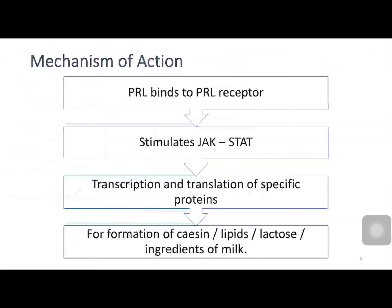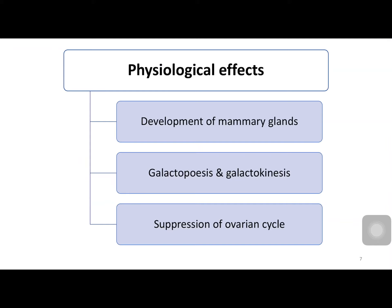Prolactin mainly acts on the prolactin receptor present in the mammary tissue and causes formation of more casein, lipids, and lactose, which are the main ingredients of milk. The physiological effects of prolactin are development of the mammary gland, galactopoiesis — that is production of milk — and galactokinesis — that is secretion of milk. Another important physiological role of prolactin is suppression of the ovarian cycle by inhibiting the release of gonadotropin releasing hormone from the hypothalamus.